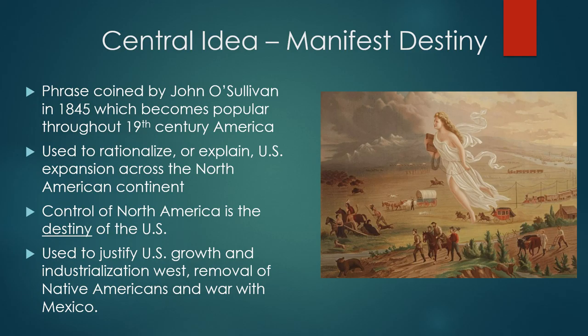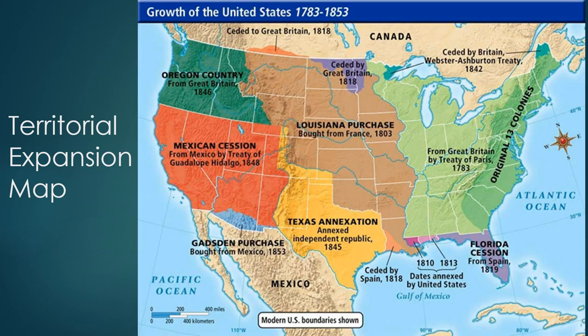The central idea in a lot of this western expansion was Manifest Destiny. This phrase was coined by John O'Sullivan in 1845 — he was a newspaper editor — and it became popular throughout the 1800s in the United States. It's used to rationalize US expansion across the North American continent. The idea behind it is that control of North America is the destiny of the United States, something fated to happen. This philosophy is used to justify US growth and expansion into the West, industrialization, the removal of Native Americans, and the war with Mexico.